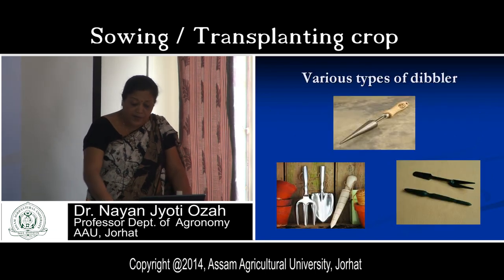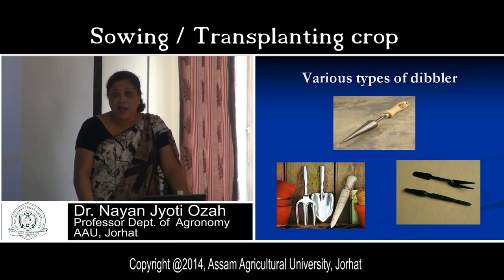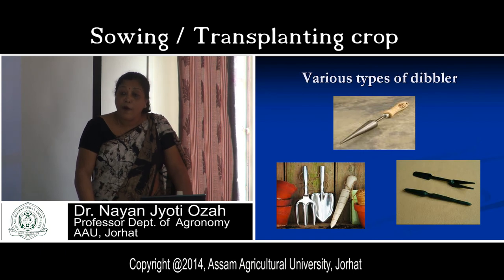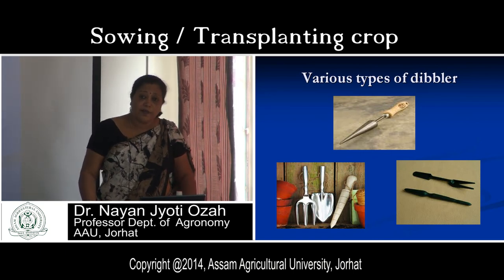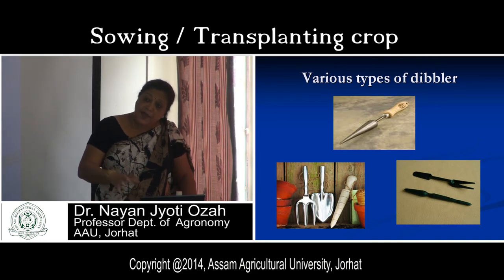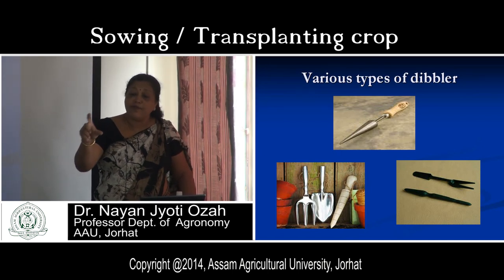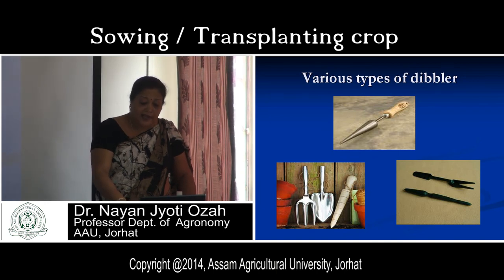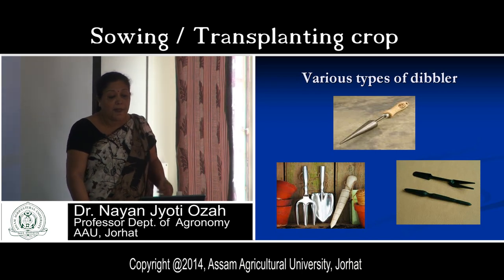The definition of dibbling: it is a method of putting a seed or a few seeds or seed materials in a furrow, hole, or pit made at a predetermined spacing and depth, using a dibbler or planter, or very often by hand. Spacing must be maintained. Dibbling is generally adopted for widely-spaced crops where plant-to-plant spacing is more. Various types of dibblers are available; if not available, you can use a bamboo stick or wooden stick as a dibbler.